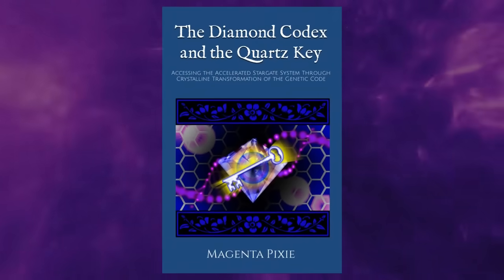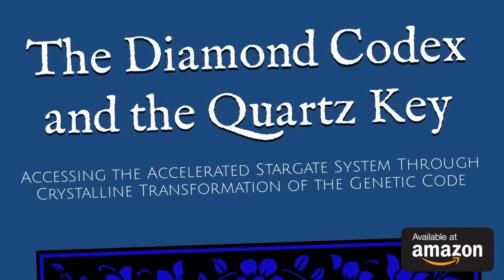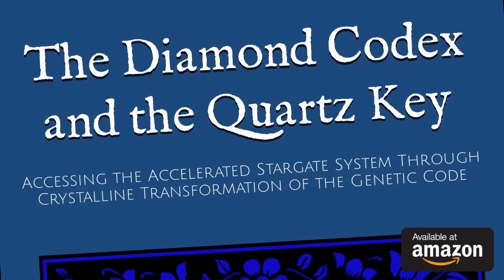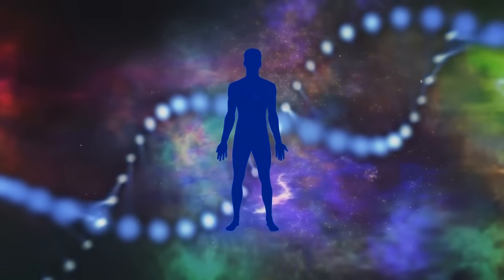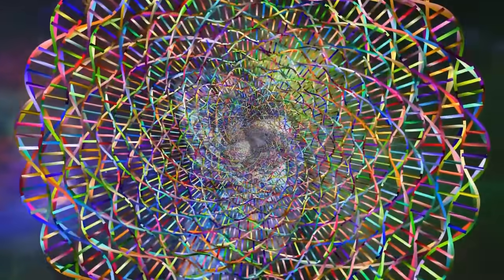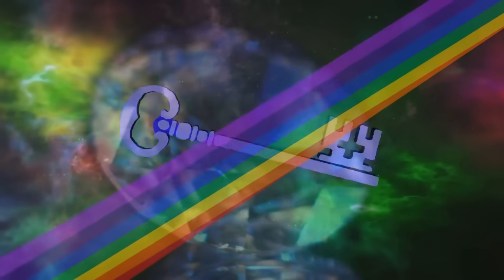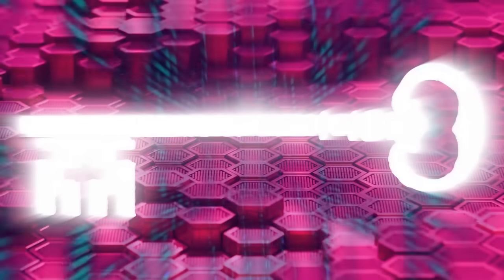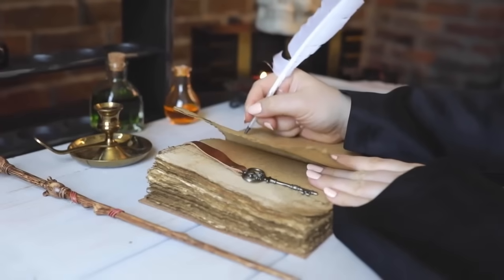I am just so happy to be able to announce to you that my new book is available, The Diamond Codex and the Quartz Key: Accessing the Accelerated Stargate System through Crystalline Transformation of the Genetic Code. What does it mean to transmute one's DNA from carbon based to crystalline within the context of spiritual enlightenment and physiological evolution? Practical templates for photonic light gene expression, alchemical unification, and light body activation are provided within this channeled transmission, delivering this codex at a time within humanity's awakening and expansion when synchronicity is abundant.